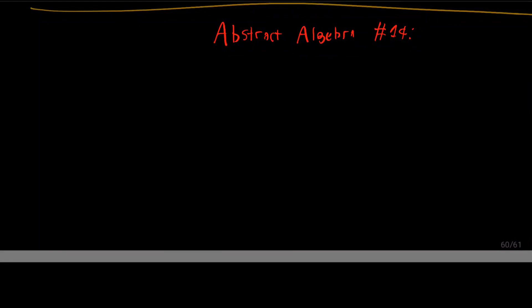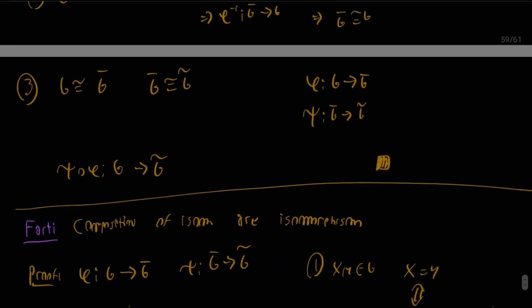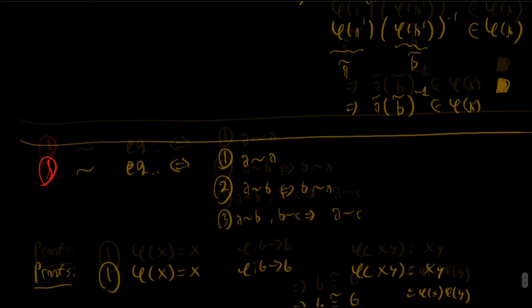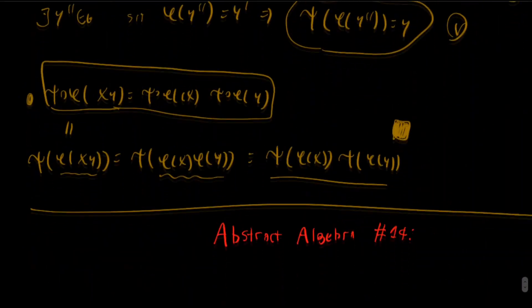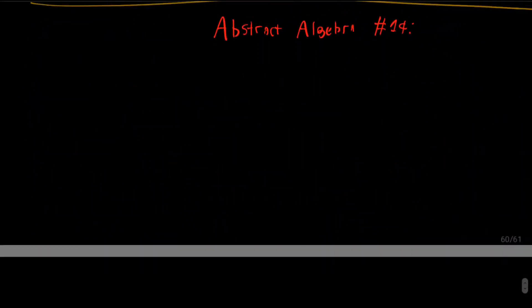Hello everyone and welcome to this new video about abstract algebra. In the last video we talked about some pretty important properties of isomorphisms, and we said that we can use these properties to prove that some groups are not isomorphic. So let's actually do that and give some examples.